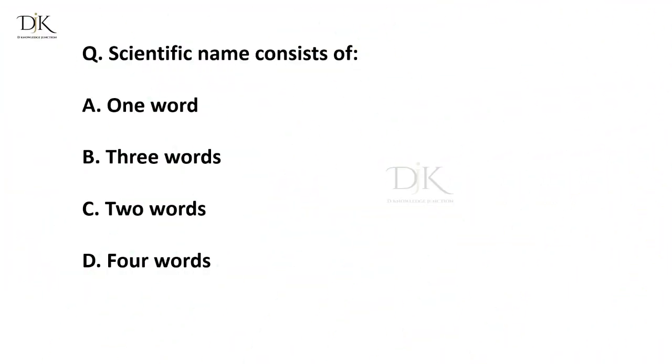A scientific name consists of? The right answer is two words.